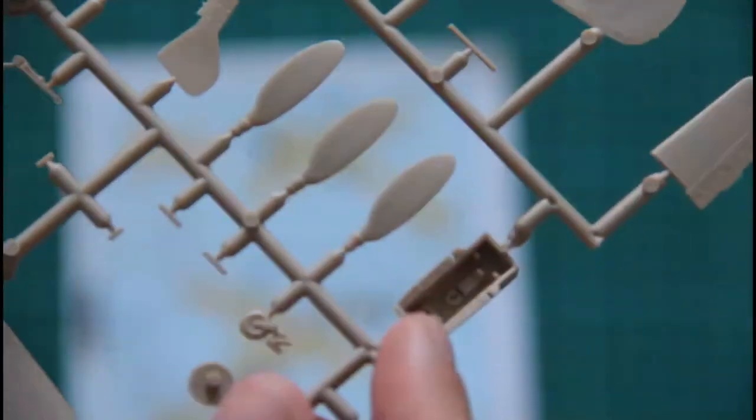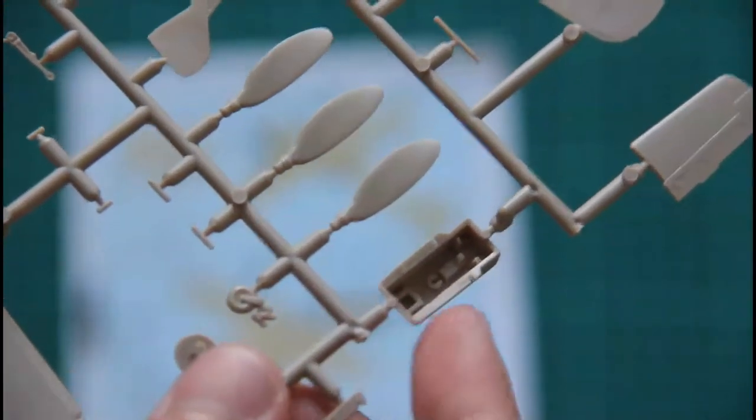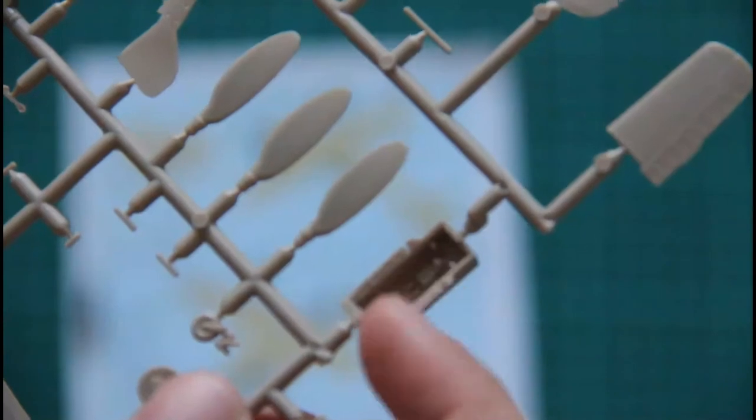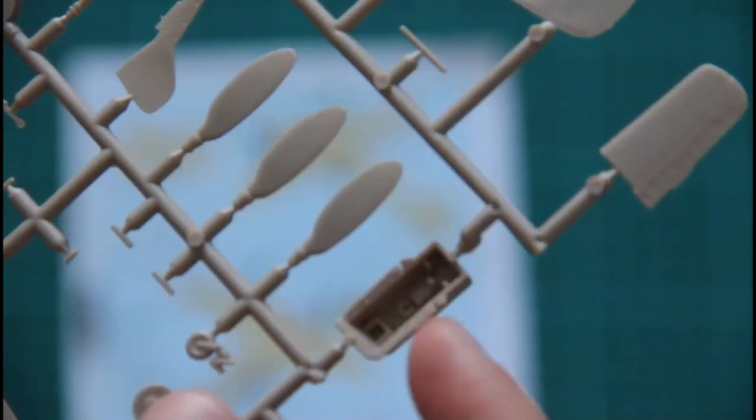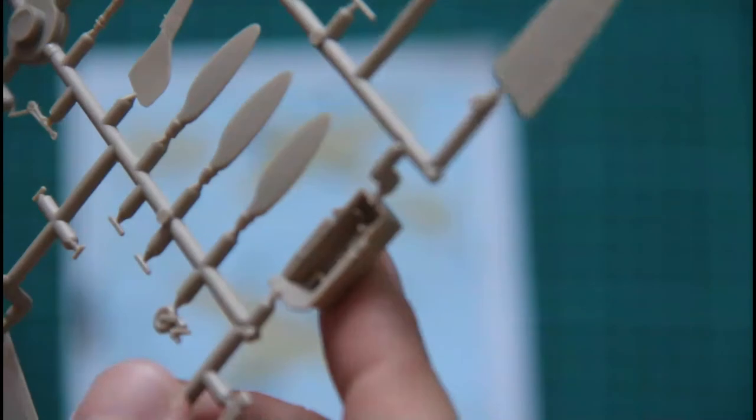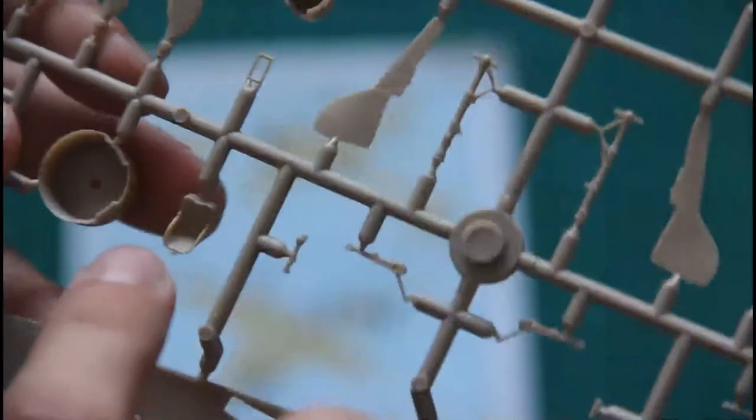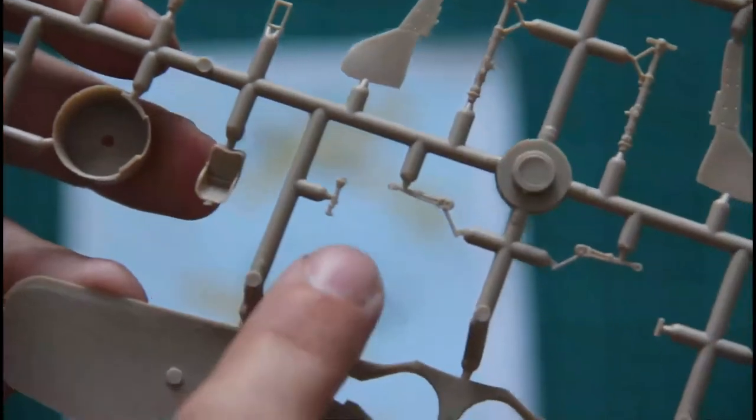The cockpit base is molded as a separate single part with some molding depicting the actual cockpit of the Focke-Wulf. The pilot seat is done as a separate part as well as the joystick. And I think that's pretty much all.